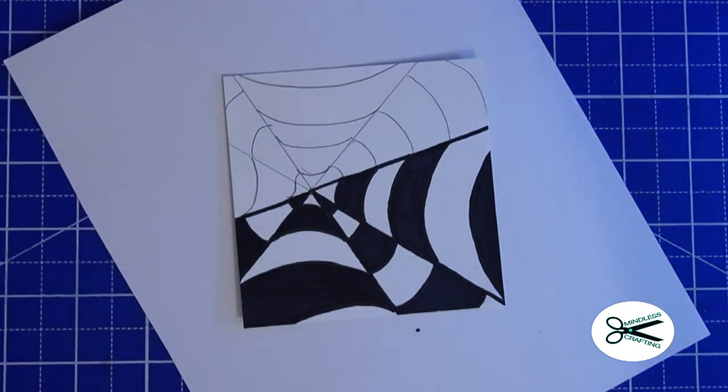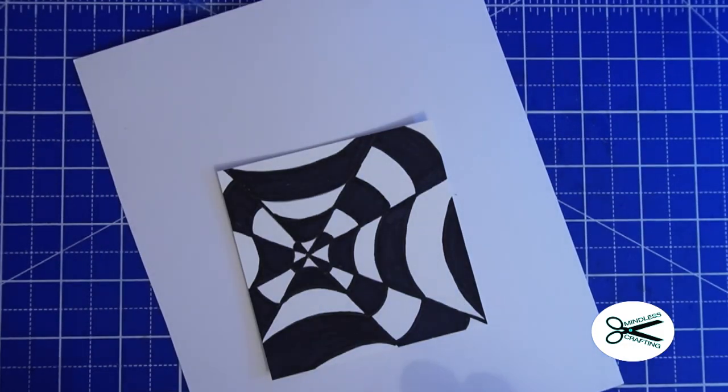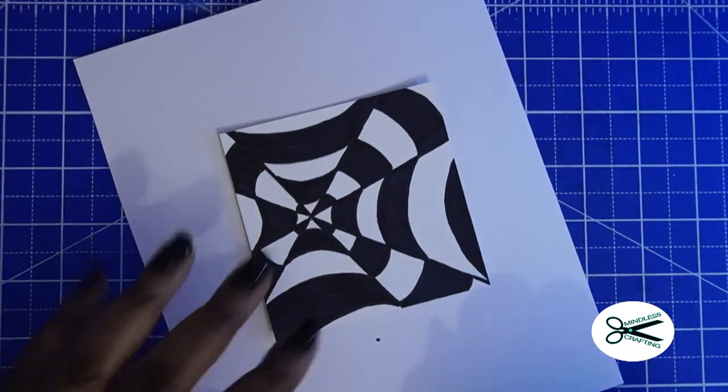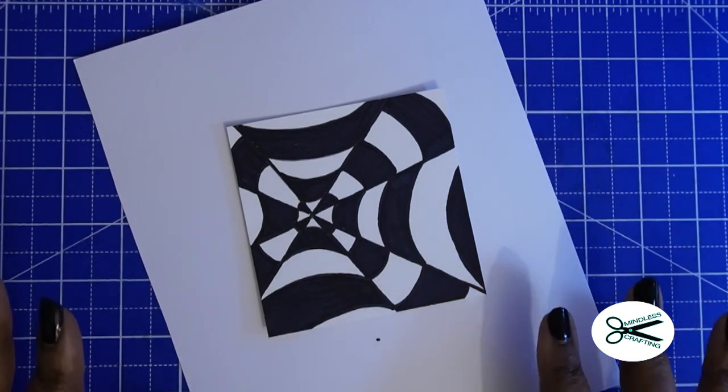I think this would be a cool card for just about anybody really. But maybe for a teenager, I think that would be really cool. Okay, so you see how the lines are there? Okay, see how that's starting to come? You're starting to see that illusion there, right? I'm going to go ahead and continue the rest and finish this off. And then I'm going to show you how to make it into a card.